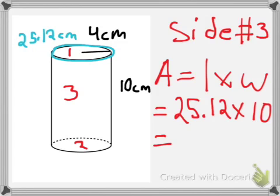Next, now we know the circumference, this will help us find the area. The area of the rectangle would be 251.2 centimeters squared.